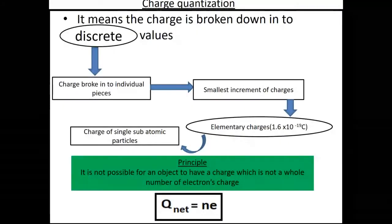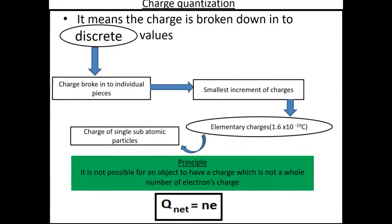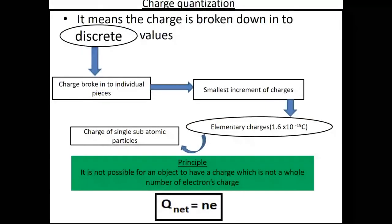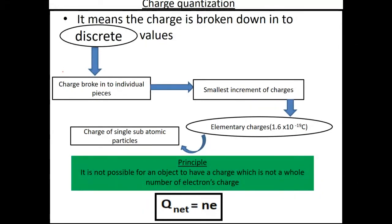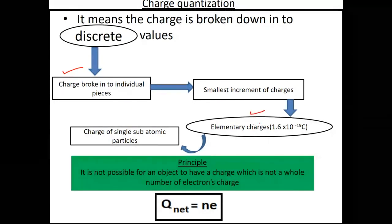Now the second important formula in this chapter is charge quantization. If I have one big charge and break it into many individual pieces, each piece carries a discrete value. The charge will never have a half value or quarter value — it is always a whole multiple of the elementary charge.